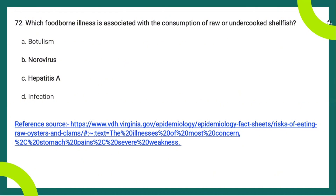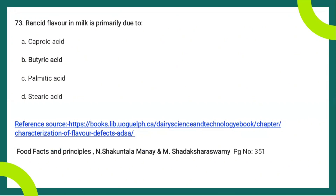The next question: rancid flavor in milk is primarily due to — the answer is butyric acid. The rancid flavor of milk is due to the breakdown of fats into fatty acids and glycerol, which is the hydrolysis of milk fat by the enzyme lipoprotein lipase. Milk contains considerable amounts of short-chain fatty acids, particularly butyric acid, with carbon chain lengths ranging from 4 to 26 carbon atoms. Butyric acid contains 4 carbon atoms and is responsible for the rancid flavor in milk.